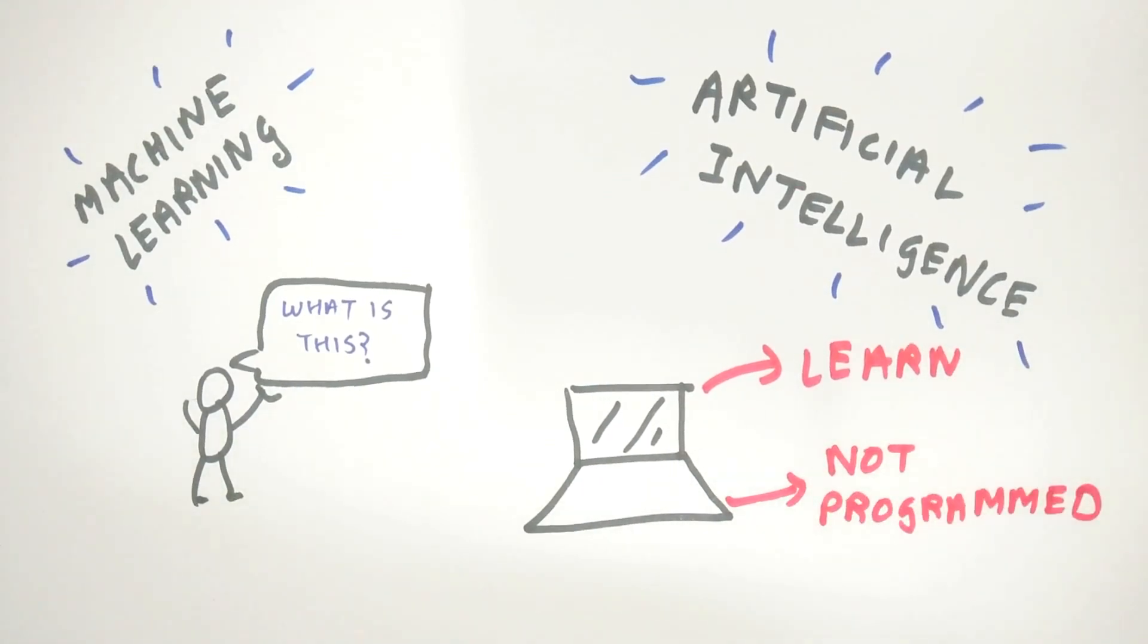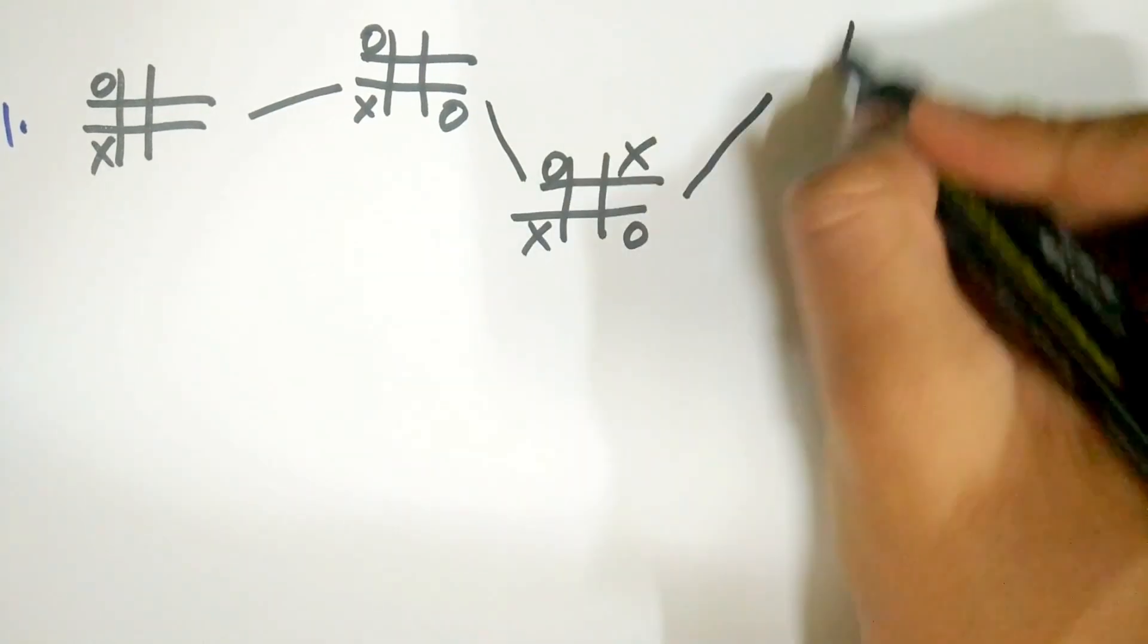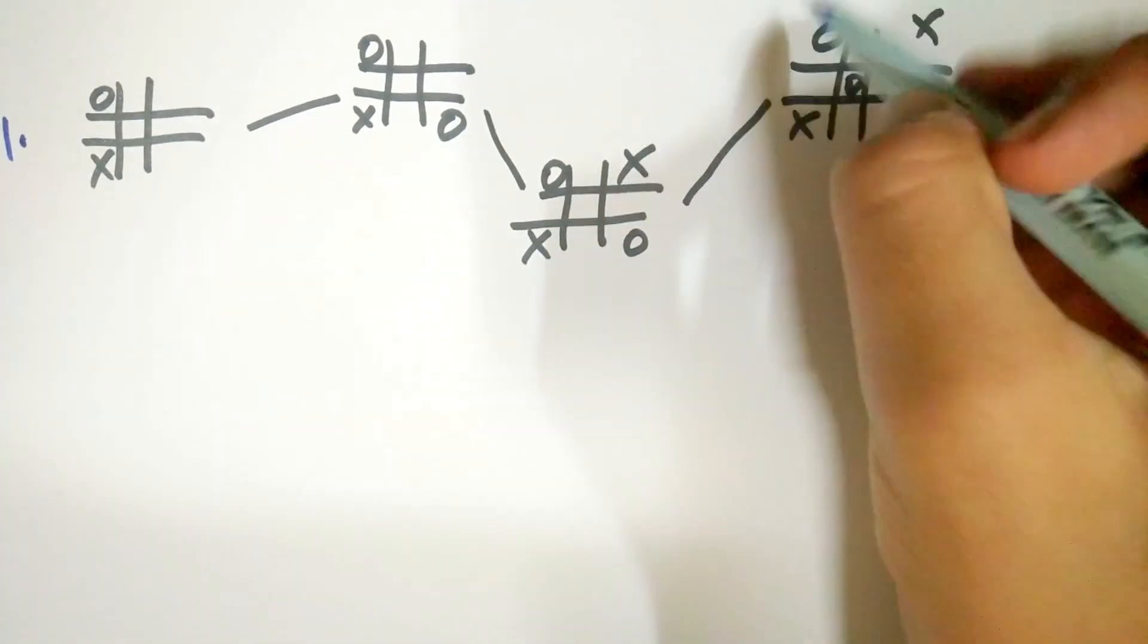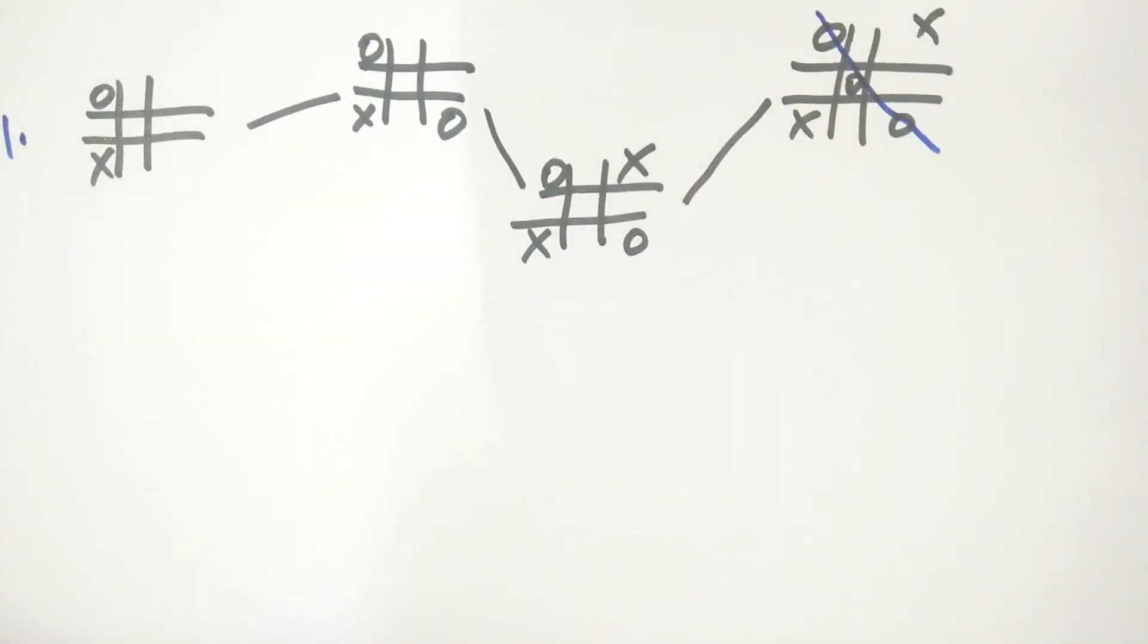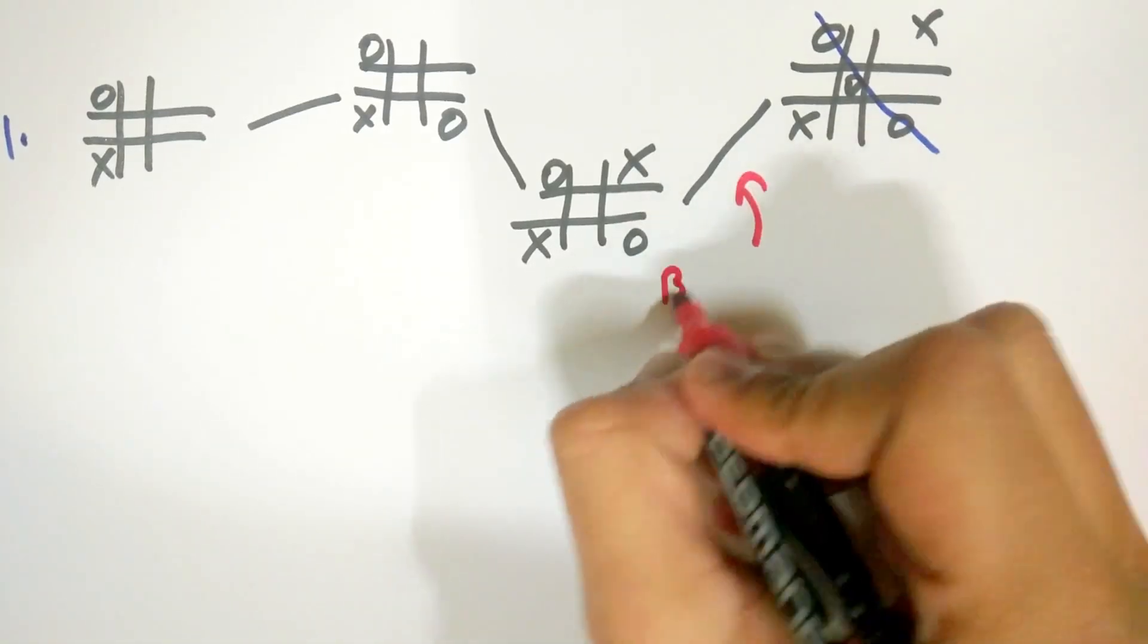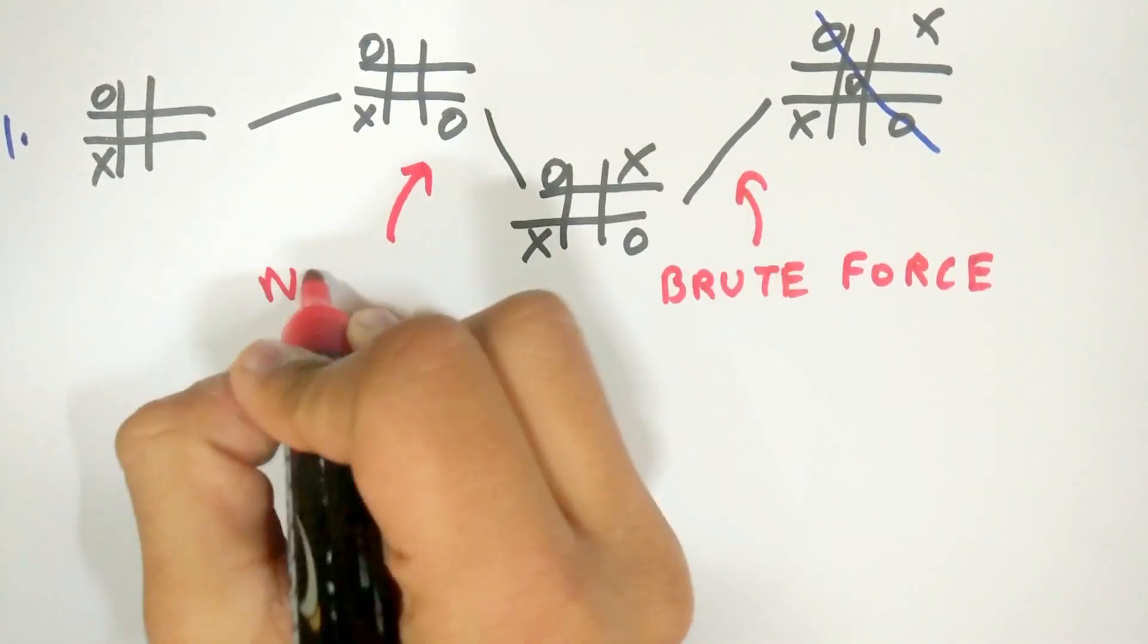To explain what machine learning is, let's take an example. Suppose you come across a software that is able to play a game of tic-tac-toe with you. Is this machine learning? Well, that depends. A software can be made that has all the possible cases of tic-tac-toe and thus it branches its way through the cases depending on every move you take. This is not machine learning.